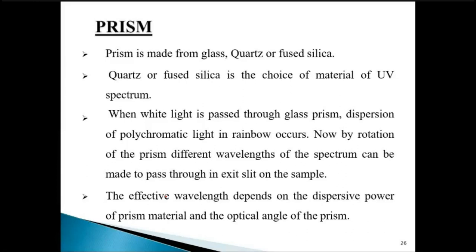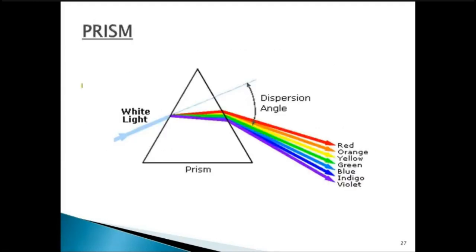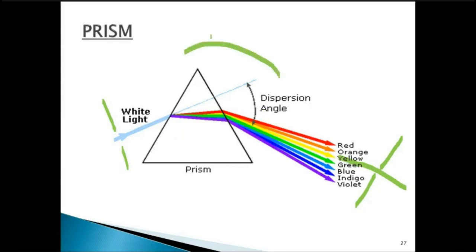Coming to prisms — we have studied prisms from school. Prisms are made from glass, quartz, or fused silica; quartz or fused silica is the choice of material for the UV spectrum. When white light is passed through a glass prism, dispersion of polychromatic light occurs, forming a rainbow. By rotating the prism, different wavelengths of the spectrum can be made to pass through the exit slit toward the sample. If the prism is enclosed in a chamber with an entrance slit and an exit slit, rotating the prism changes which wavelength passes through — for example, rotating to a different angle may change from yellow to blue light passing through.